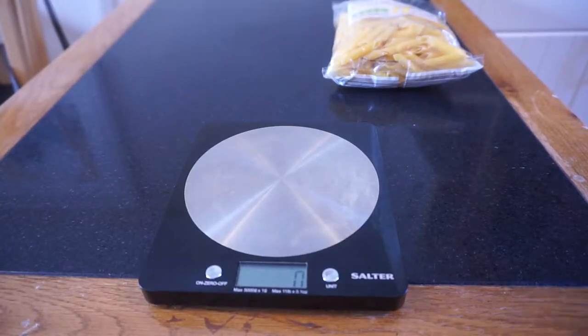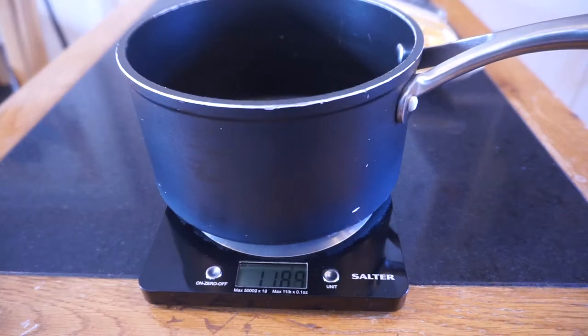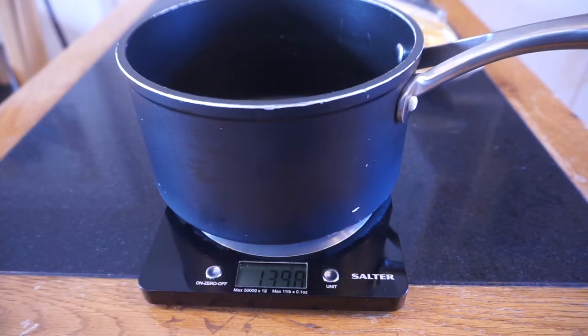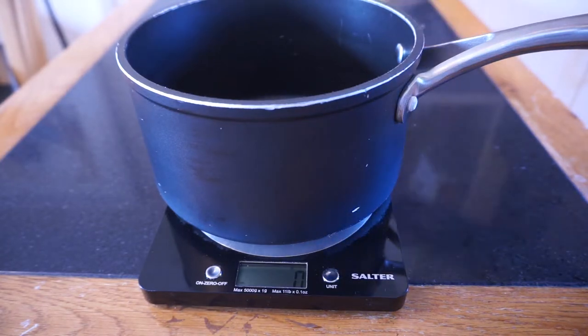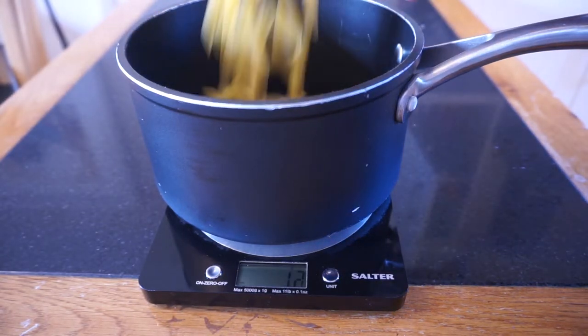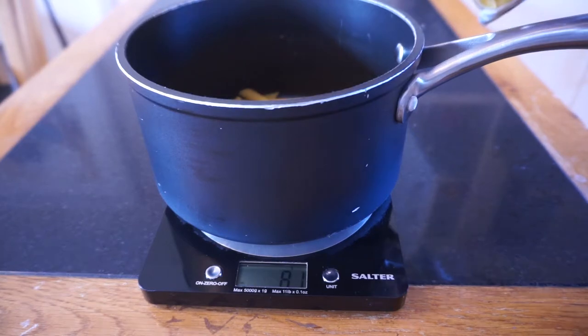So for example, I could put the pan on. It will weigh the pan, obviously. Press the zero button, take it back down to zero. Now I can measure whatever I want to cook. So let's say pasta. Take it up to 150 grams.